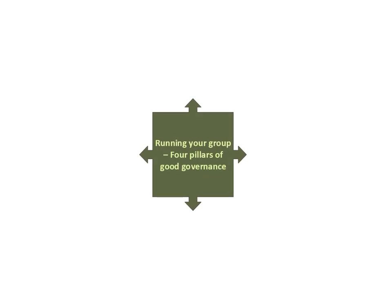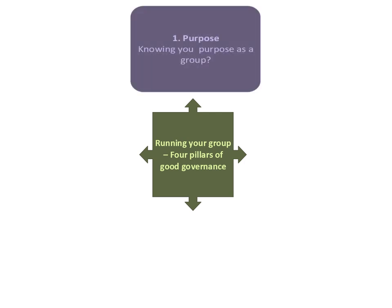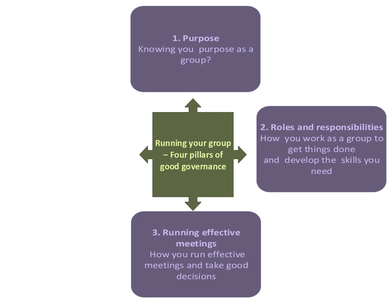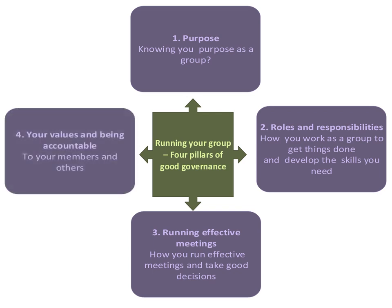We think it can be helpful to think about running your group in terms of four pillars of good governance. These are: that you know your purpose from the beginning and keep sight of it as your group develops; that you are clear about the roles and responsibilities within your organisation and how you work together to get things done and develop the skills you need to do it well; that you have effective meetings which are the core of your organisation — taking good decisions based on good information, having thought about all of the options and the consequences; and keeping sight of your values and being accountable to your members and other stakeholders like your partners and your funders.